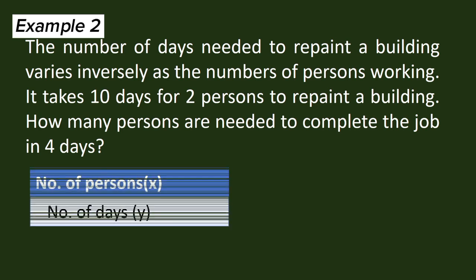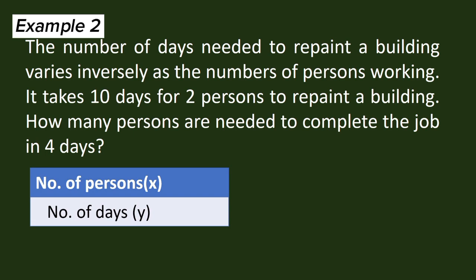We will let the number of days be Y and the number of persons be X. The number of days, Y, varies inversely as the number of persons, X. So our equation now is Y equals K over X, or XY is equal to K.